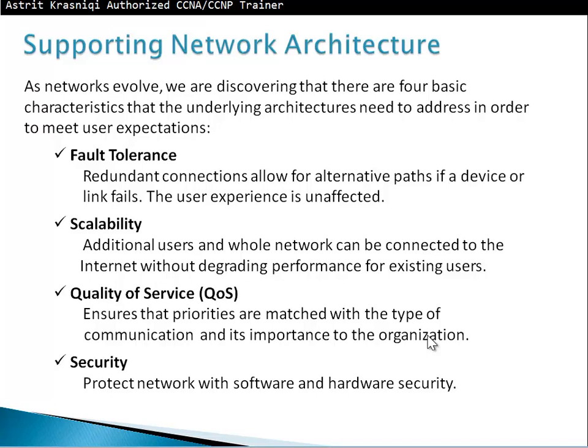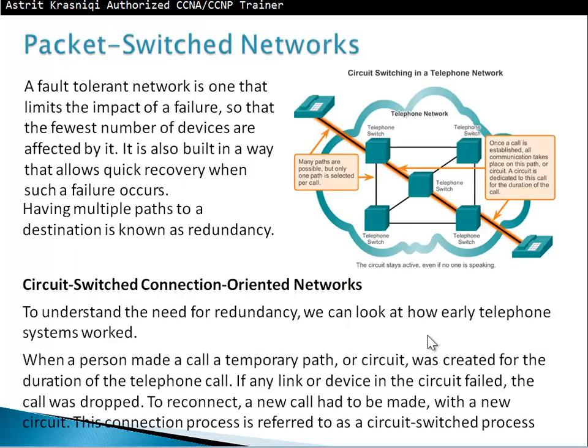Then we have security. We protect the network with software or hardware security. Software security examples include antivirus, anti-spyware, and software firewalls. For hardware security, we have physical firewall devices, IPS devices — intrusion prevention system — and intrusion detection system. These are hardware devices. And for hardware, you can think of security lockable cabinets — that's good security as well.